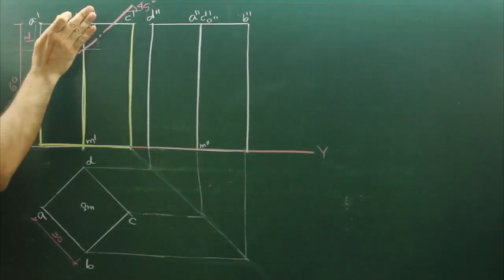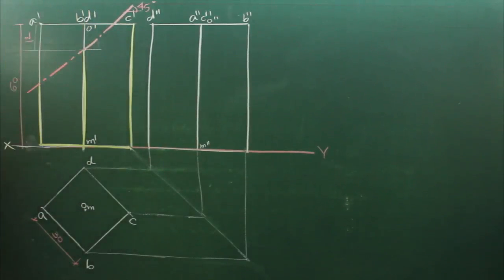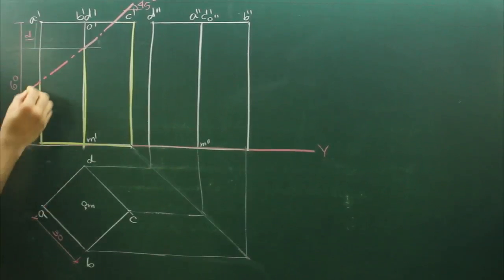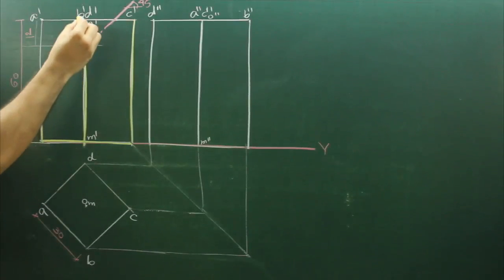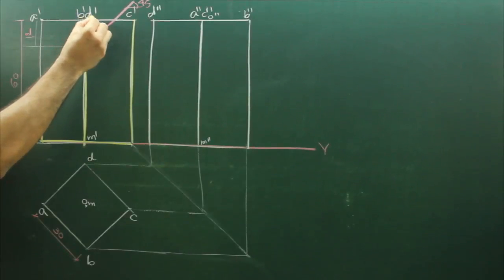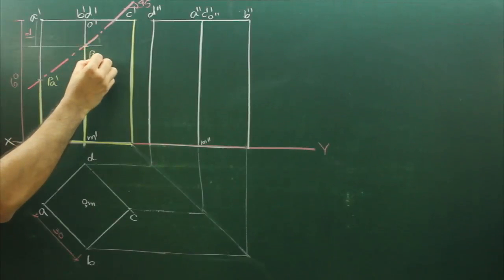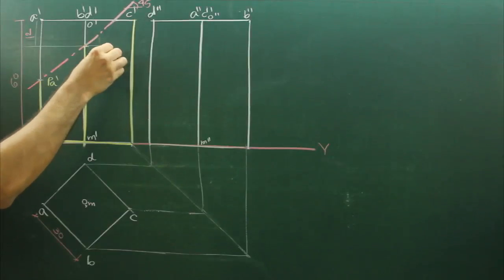When you cut like this, the upper portion will go away. Now how many points are we getting? If you see, A dash, so over here we will get one point, PA dash. Over here there are two edges, B dash, D dash, so here we will get PB dash and PD dash.